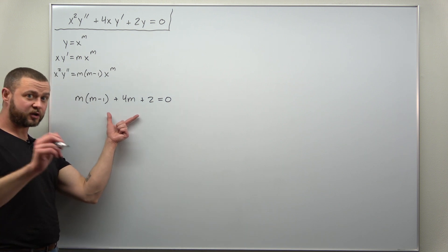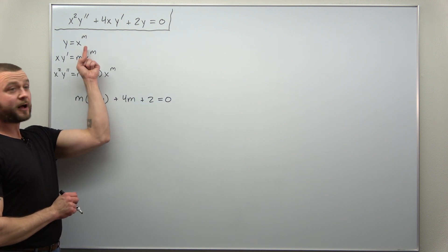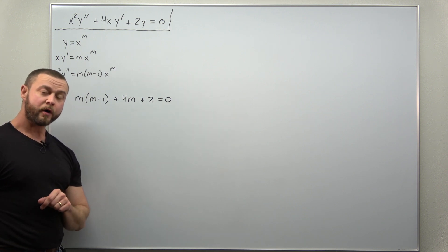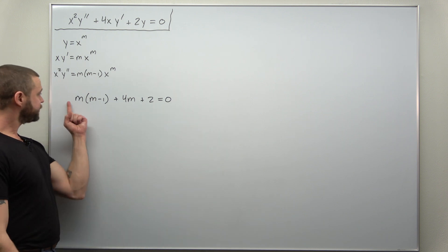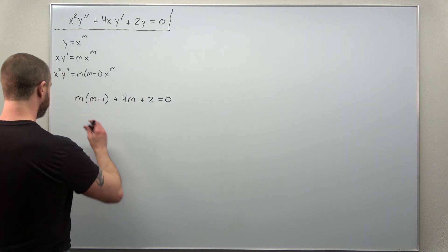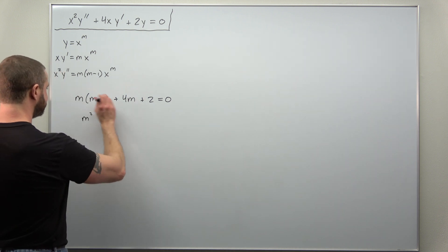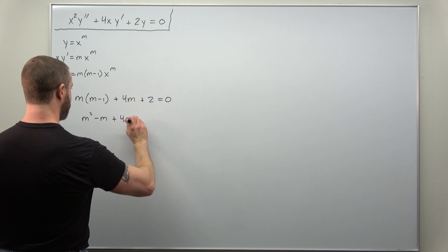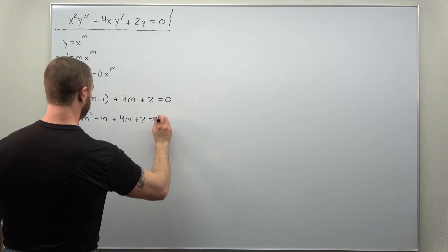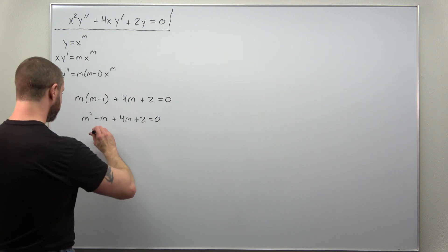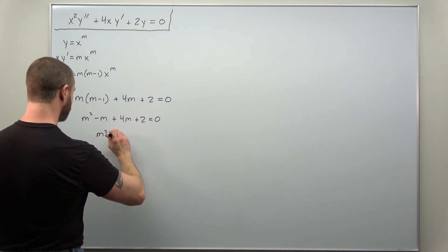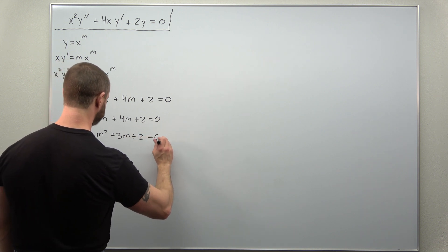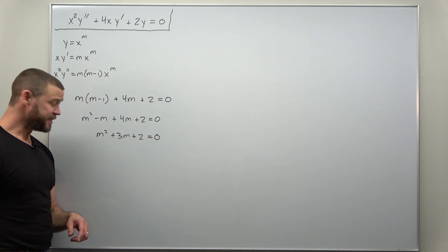And we now have the auxiliary equation for the values of m that give us our solutions. We're going to always see if we can factor that. Always expand this term: m squared minus m plus 4m plus 2. You have some like terms: m squared plus 3m plus 2, and I think we've lucked out.